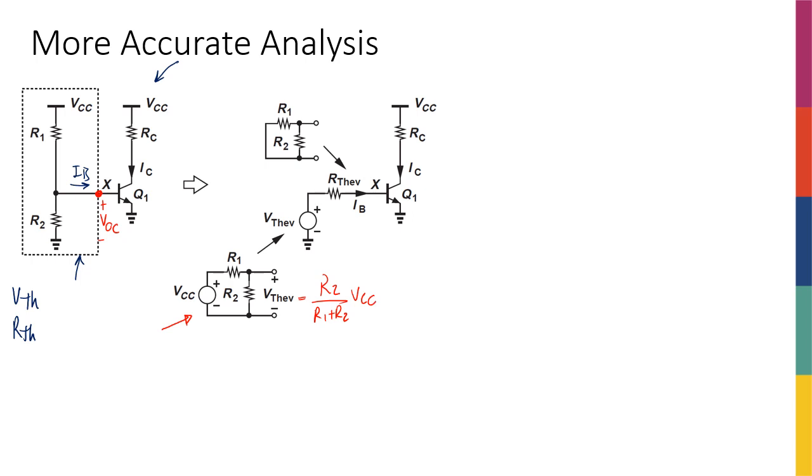And then my R-Thevenin, I have a lot of ways to do it. One way was that we turn off all the voltage sources, so Vcc becomes ground. So the R1 is actually connected to ground, and then I'm going to basically look into equivalent resistance from the output. So I'm going to have R1 and R2 in parallel. So the R-Thevenin is going to look like this. So R1 and R2 are in parallel.